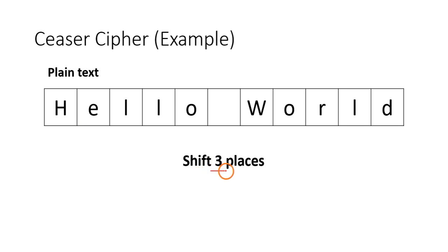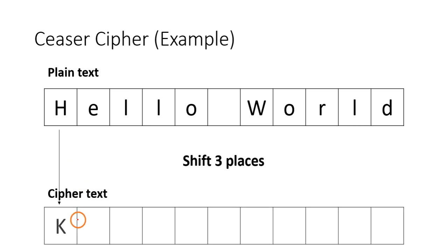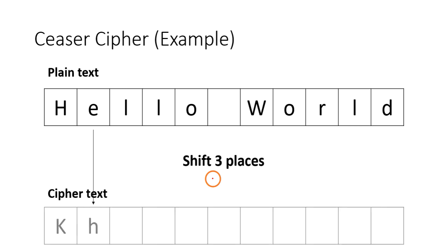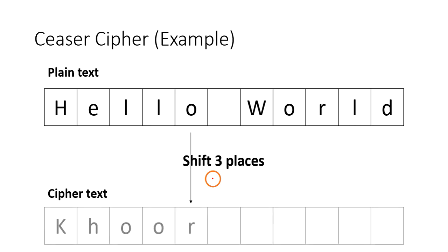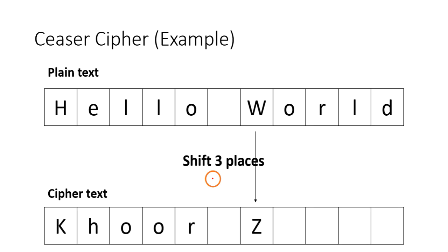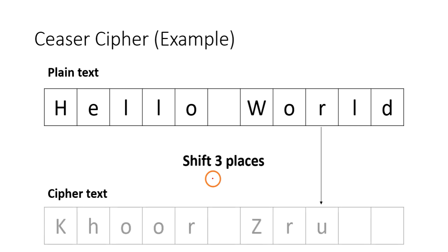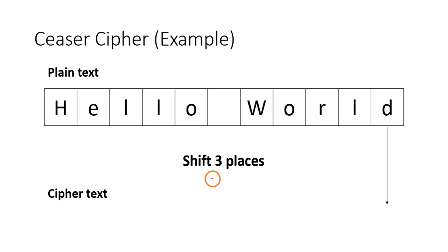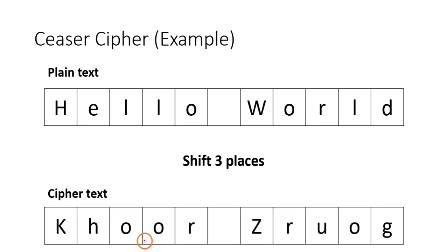Caesar cipher takes each character and shifts it three places forward. So 'H' becomes 'K' (H → I → J → K), 'E' becomes 'H', 'L' becomes 'O', and 'O' becomes 'R'. The space remains the same. Then 'W' shifts to 'Z', 'O' to 'R', 'R' to 'U', 'L' to 'O', and 'D' to 'G'. So the cipher text for 'hello world' is 'khoor zruog'.